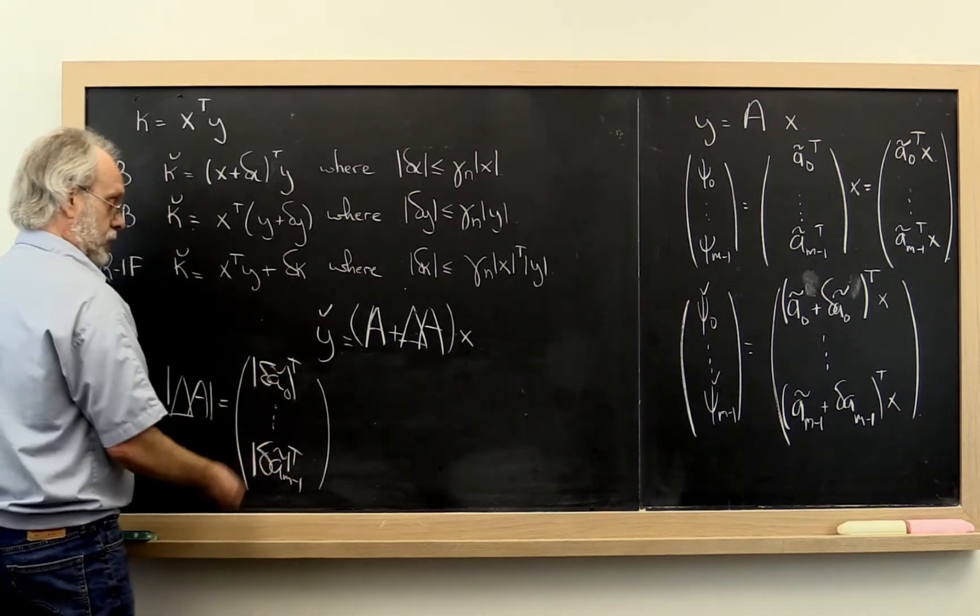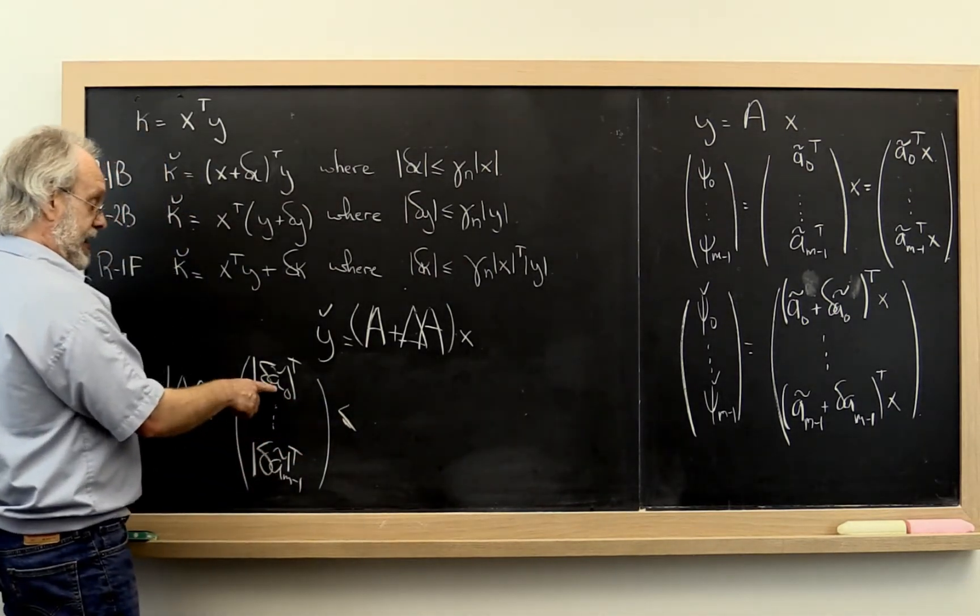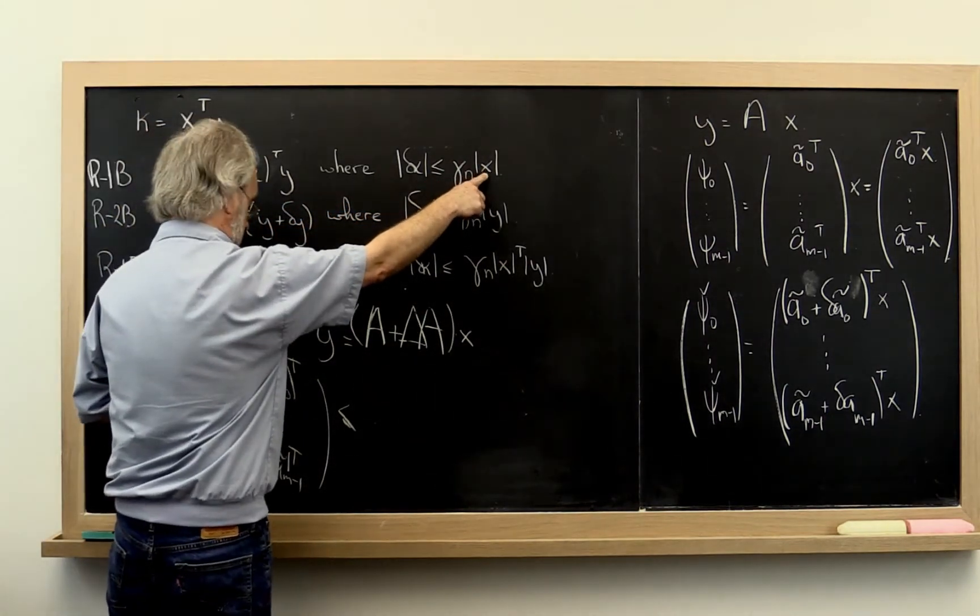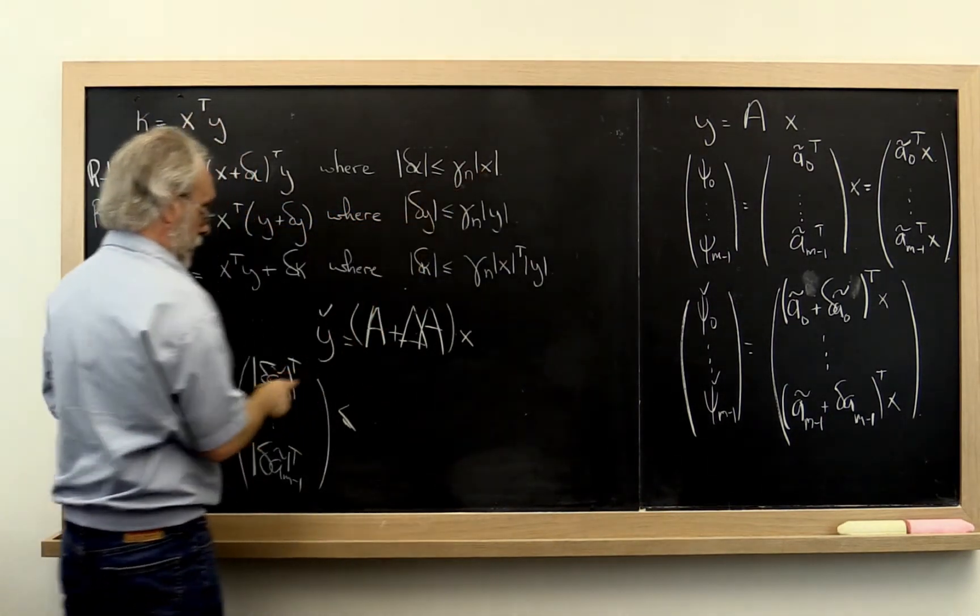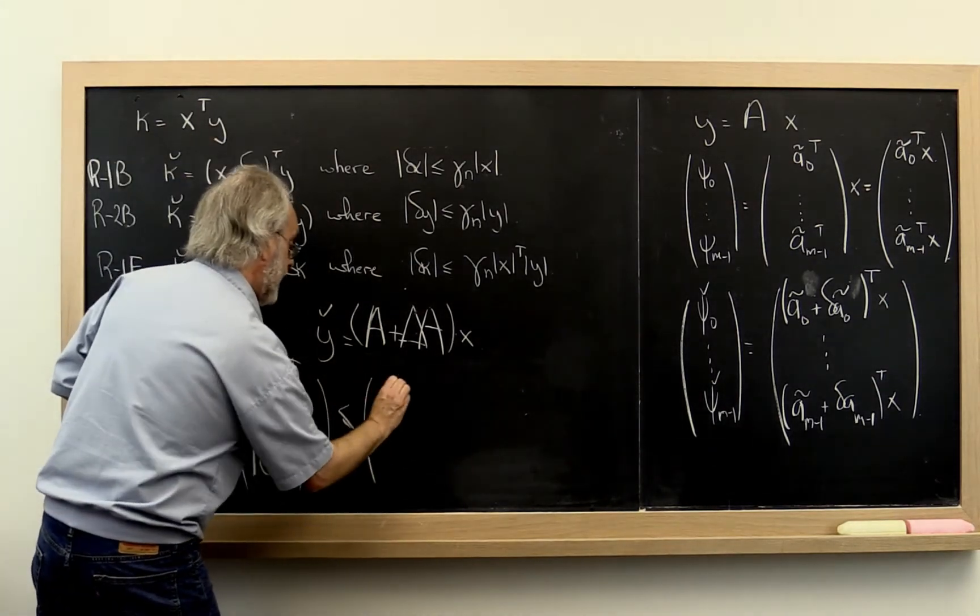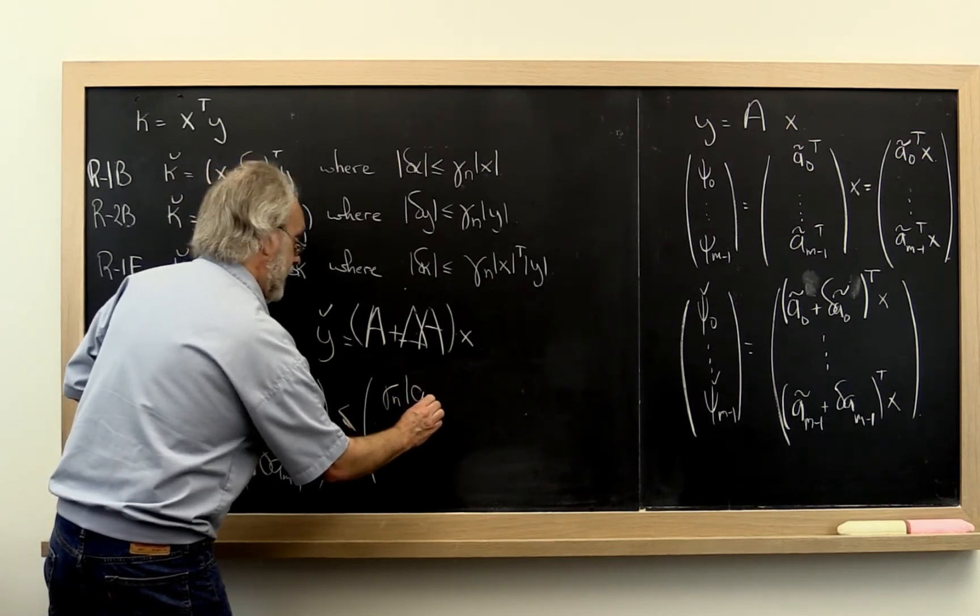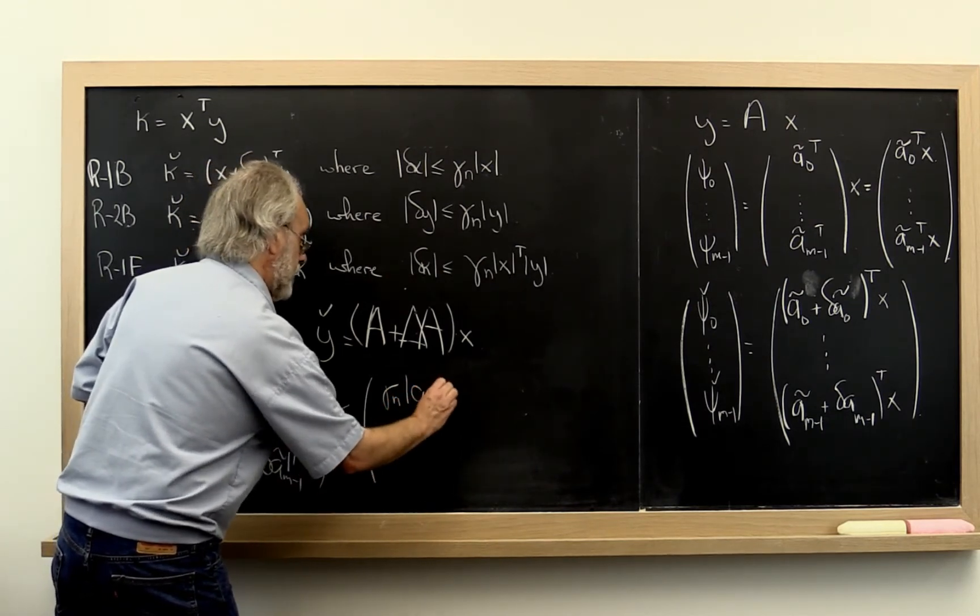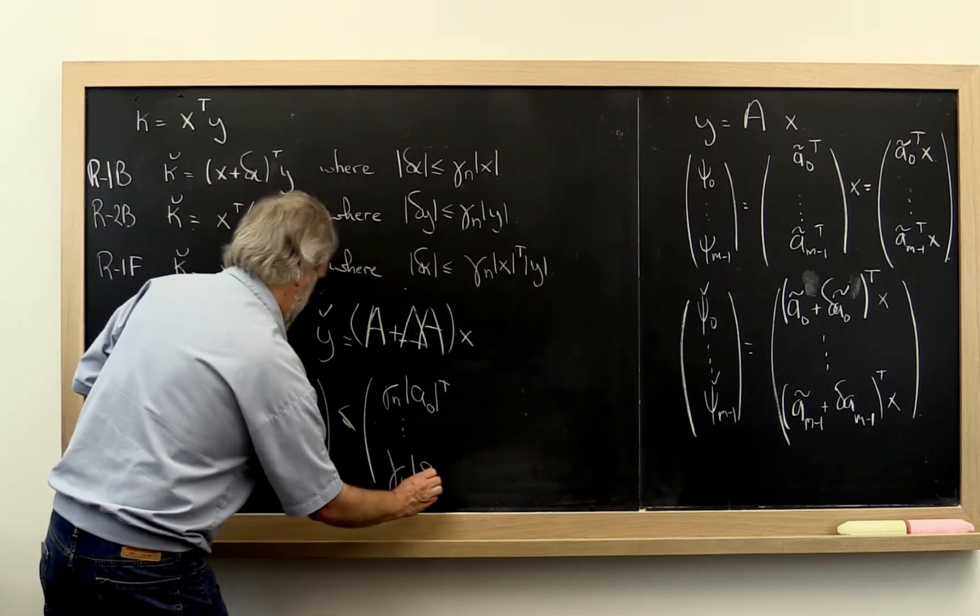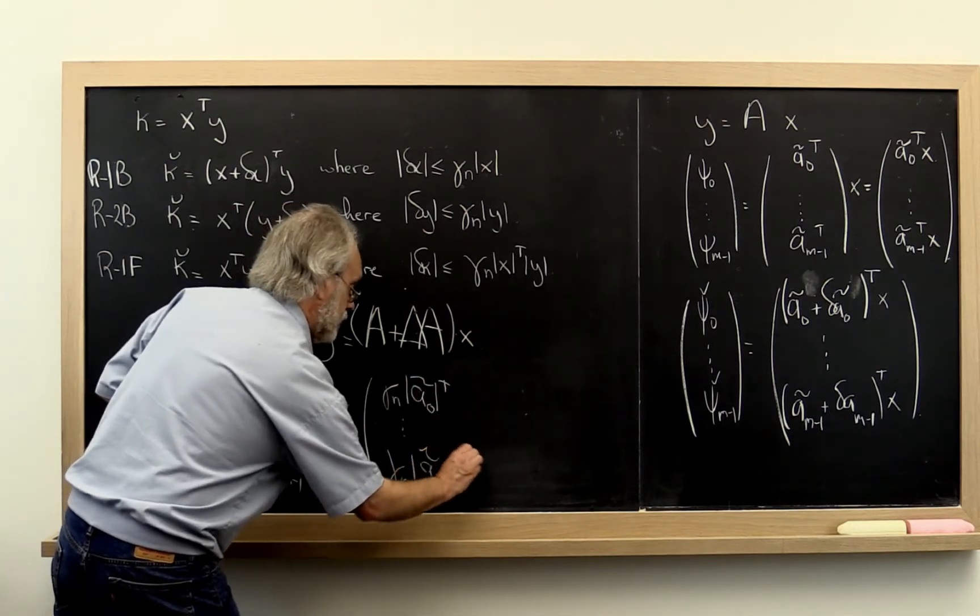Now each of these rows right here, or rather the columns that became rows, is bounded by gamma n times the appropriate row that it's added to. So this here is less than or equal to gamma n times the absolute value of A zero transpose through gamma n times A M minus 1 tilde transpose.